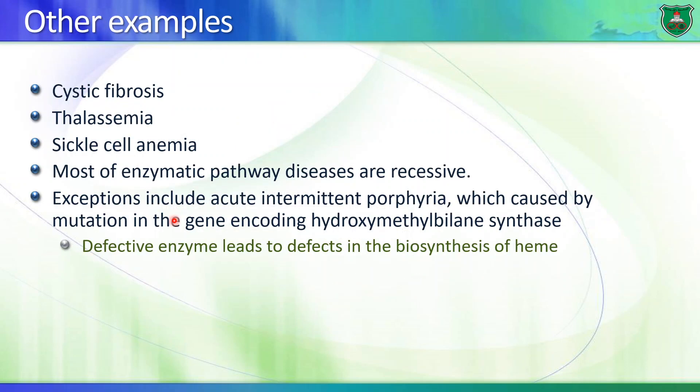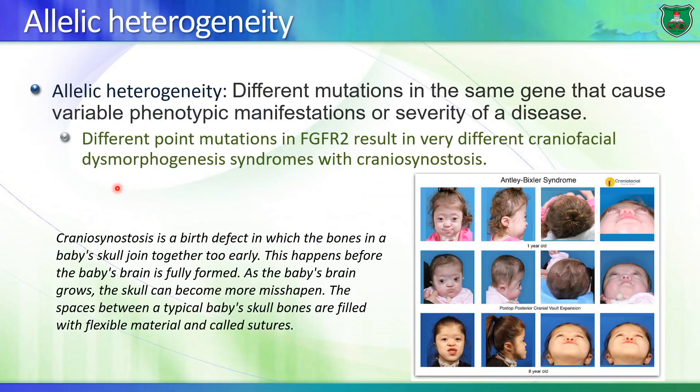There are other examples you don't need to memorize — these are given just to give you a sense of common diseases in society. Examples include cystic fibrosis, thalassemia (very common in Jordan), and sickle cell anemia.